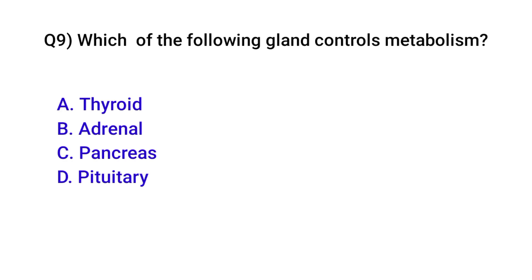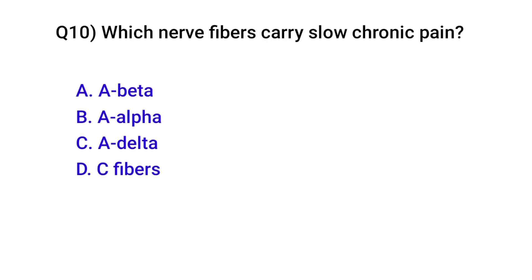Question number nine: Which gland controls metabolism? Correct option is A: Thyroid gland. Question number ten: Which nerve fibers carry slow chronic pain? Correct option is D: C fibers.